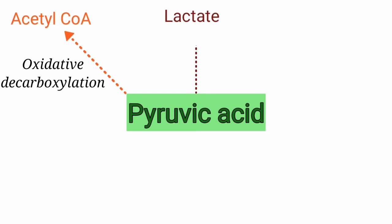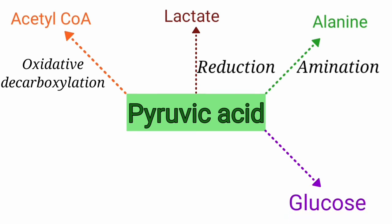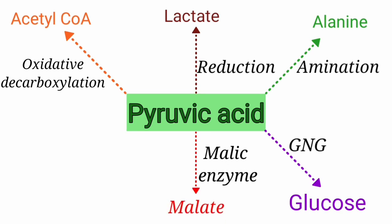Pyruvic acid forms lactate by reduction, and it also forms alanine by amination — addition of an amino group. Pyruvate also forms glucose by gluconeogenesis, and it forms malic acid by the reaction of the enzyme malic enzyme.